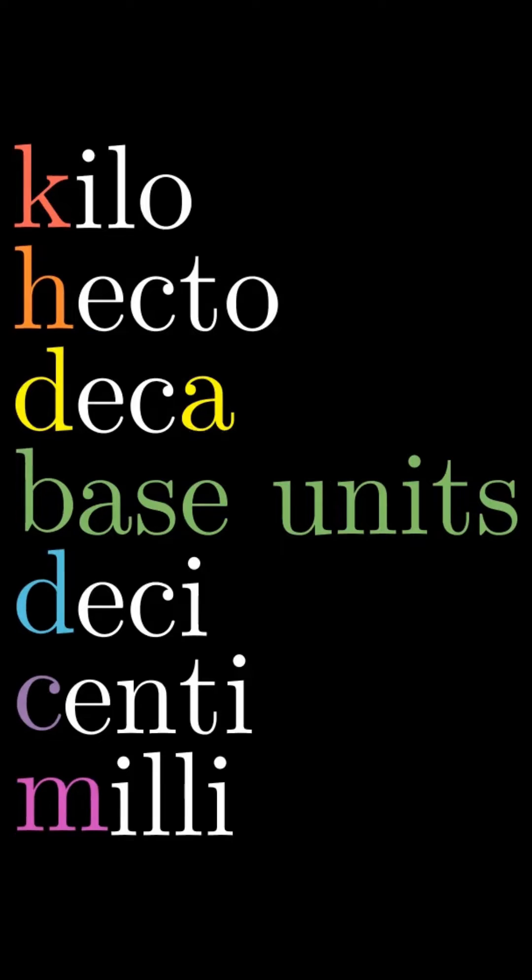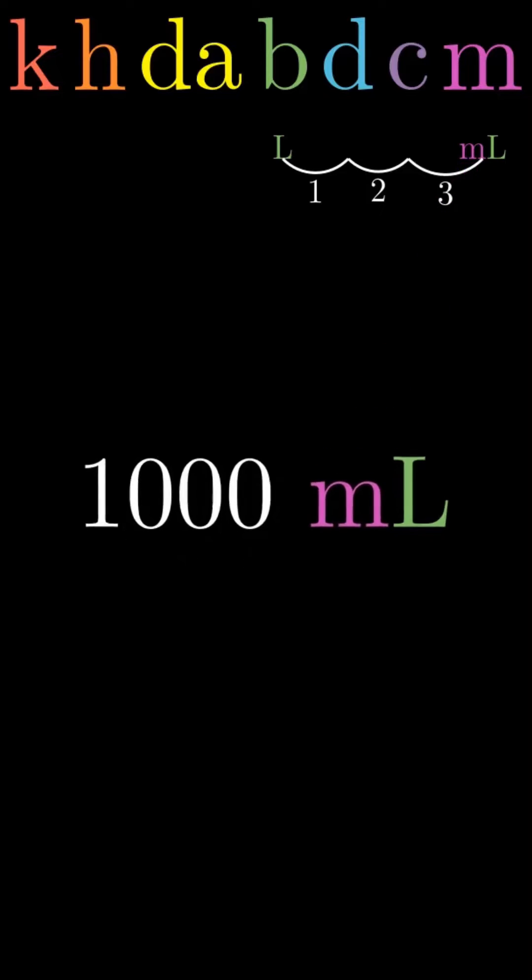Bi represents base units which have no prefix. If I have 1 liter, a base unit, and I want that volume in milliliters, notice that the M for milli is three places to the right. That's both how far and the direction the decimal moves. Add zeros for each place move where there was no digit, and it's 1,000 milliliters.